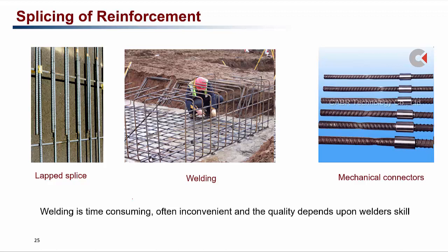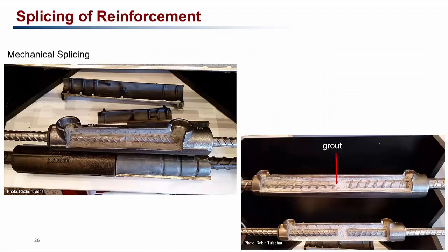A lap splice involves overlapping two reinforcement bars and tying them with wires. Welding can be tricky on site due to access limitations and heavy equipment requirements. Mechanical connectors join two bars using a connector device. In tensile tests, the connector proves stronger than the reinforcement itself — yielding occurs in the bar, not the connector. Mechanical connectors can also be grouted, filling the void inside the connector for additional strength.